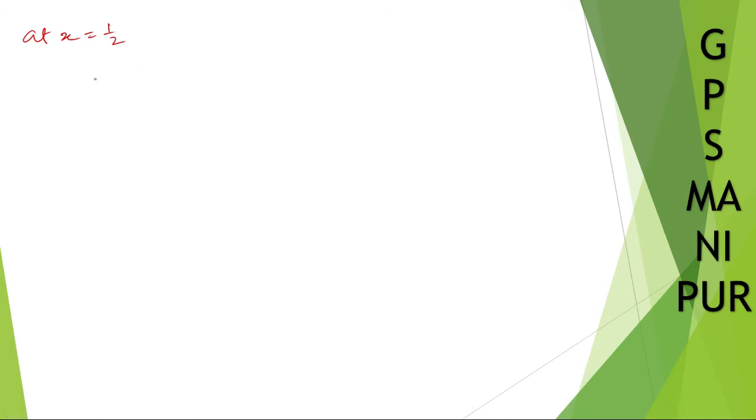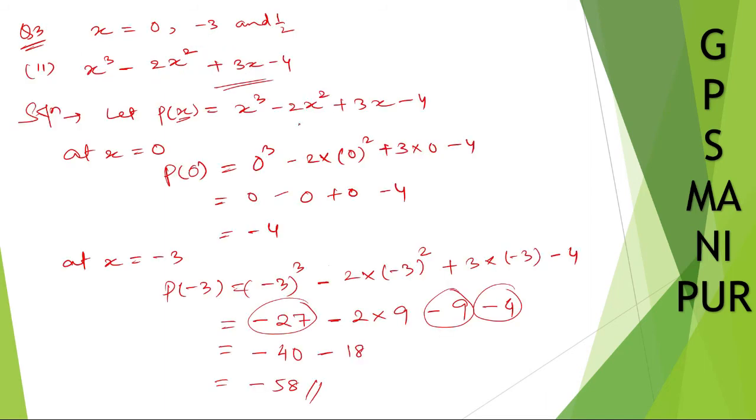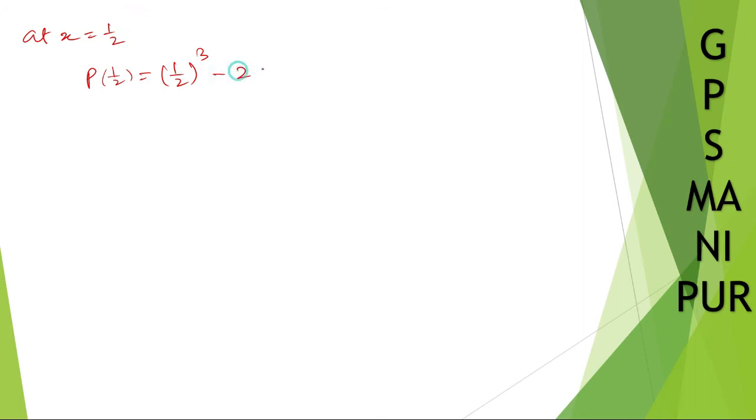Now at x equal to 1 by 2, we have p of 1 by 2 equal to - just instead of x put 1 by 2 - 1 by 2 whole cube minus 2 times 1 by 2 whole square plus 3 into 1 by 2 minus 4. Now 1 by 2 whole cube will be 1 divided by 8, minus 2 into 1 by 2 square is 1 by 4, plus 3 into 1 by 2 is 3 by 2 minus 4.